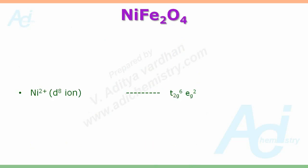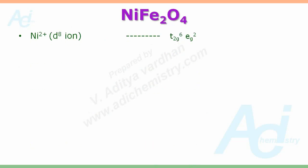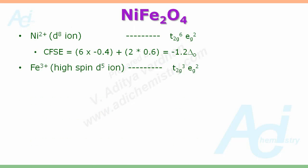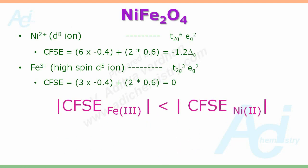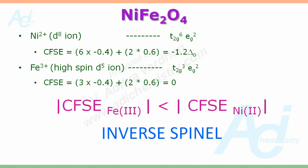The second example is NiFe2O4. Ni2+, which is a D8 ion, has the configuration T2G6, Eg2 in octahedral symmetry, giving a CFSE of −1.2 Δoct. Whereas Fe3+, which is a high spin D5 ion in octahedral symmetry with T2G3, Eg2 configuration, has a CFSE of 0. That means the CFSE of the trivalent ion is now less than the CFSE of the divalent ion, so one can expect this spinel to be an inverse one.